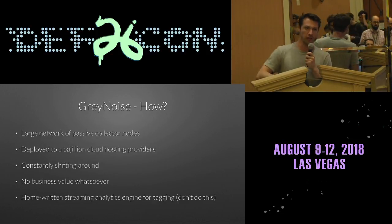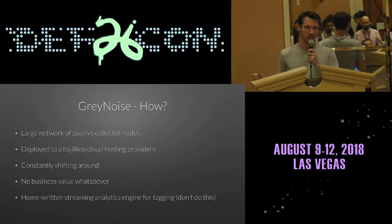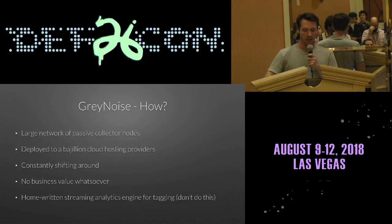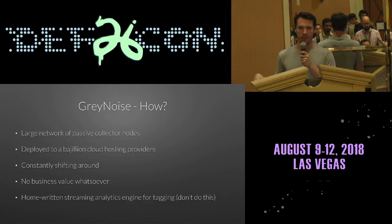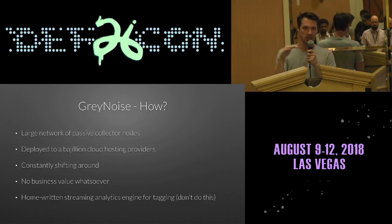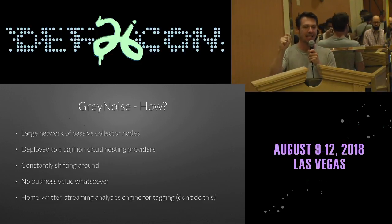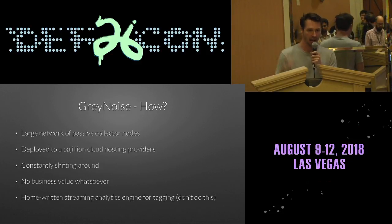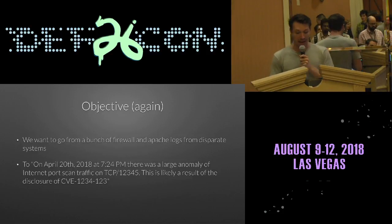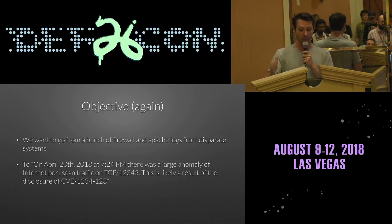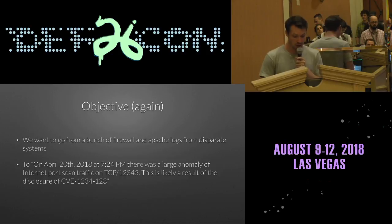How do we do it? We have a big network of nodes in many different networks all around the internet, constantly shifting around in AWS, Google Cloud, DigitalOcean, and all these different providers. They have no business value whatsoever — they just hang back and wait for people to talk to them. They're completely passive. It's like a ton of people with their ears to the ground, listening for tiny signals and aggregating them all in one place to do all this labeling and analytics to find value. We want to go from all the traffic hitting everyone to actionable intelligence — this thing happened and it probably had to do with this.